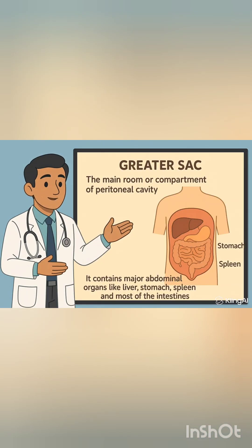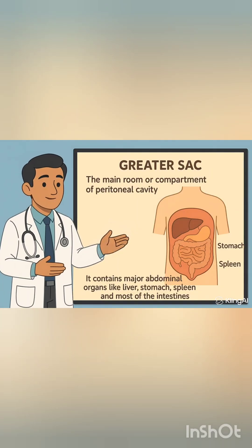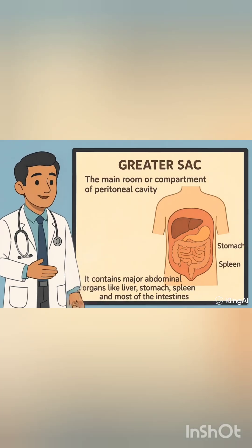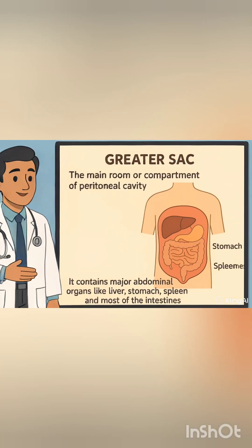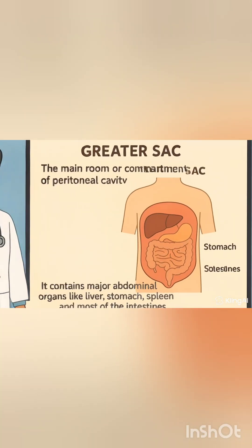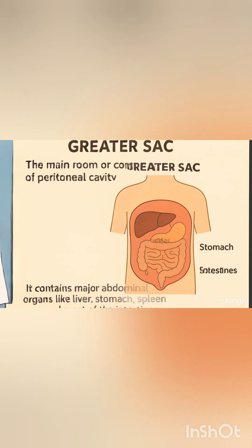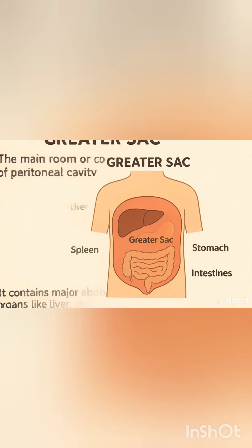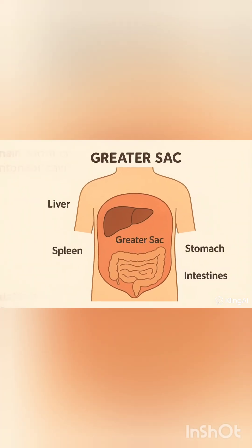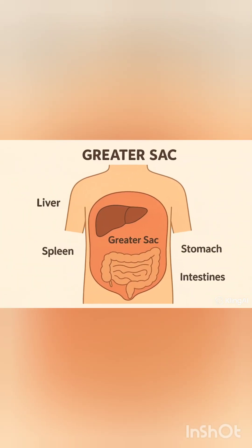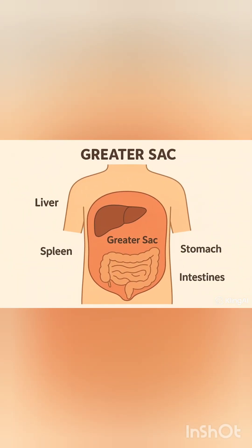Next are the divisions of the peritoneal cavity. The greater sac is the main, larger portion of the peritoneal cavity — we can call it the main room. It contains major abdominal organs like the liver, stomach, spleen, and most of the intestines.